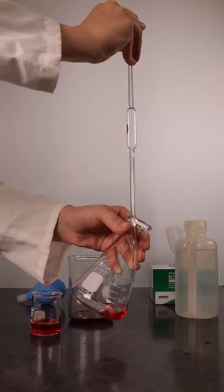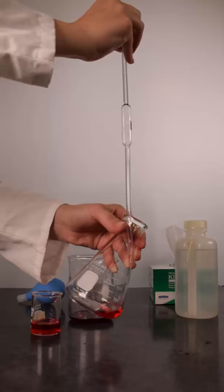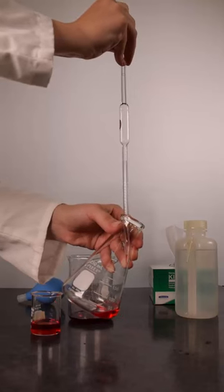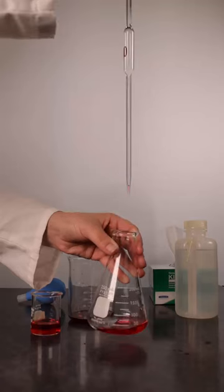After counting to 5, keep the pipette tip in contact with the inside of the flask and rotate the pipette 360 degrees. This ensures any drops on the outside of the pipette tip are transferred to the inside of the flask. After rotating, break contact between the pipette tip and flask and then remove the pipette.